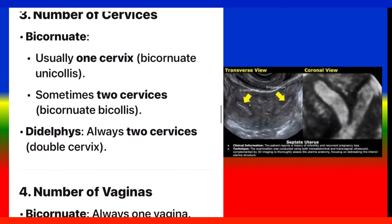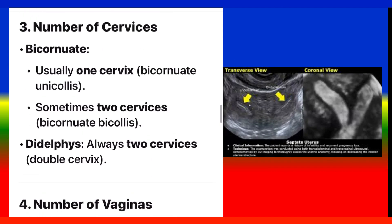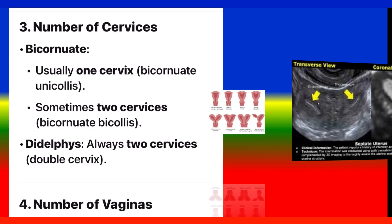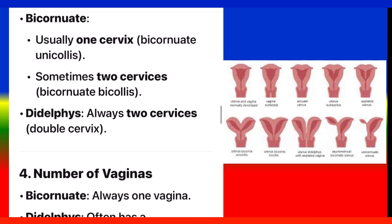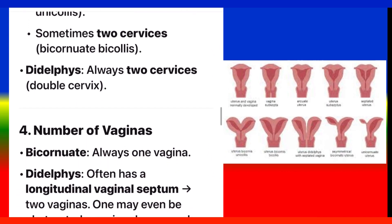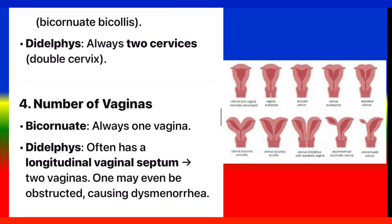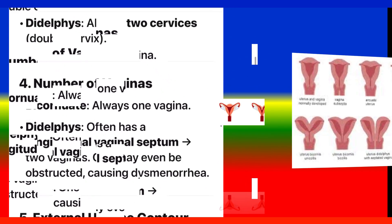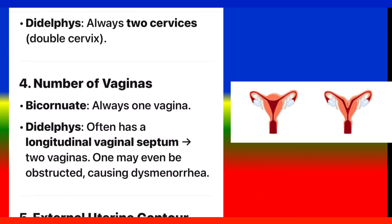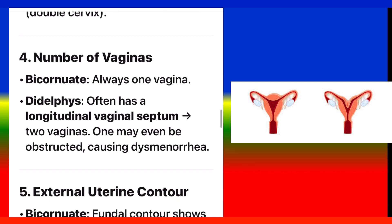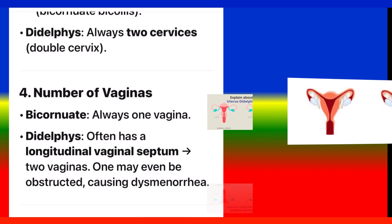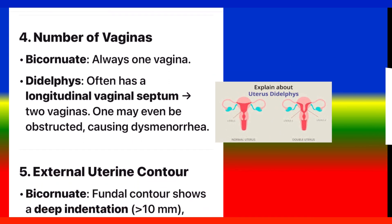Point 3: Number of cervices. Bicornuate: usually one cervix (bicornuate unicollis), sometimes two cervices (bicornuate bicollis). Didelphys: always two cervices — double cervix. Point 4: Number of vaginas. Bicornuate: always one vagina. Didelphys: often has a longitudinal vaginal septum, resulting in two vaginas.